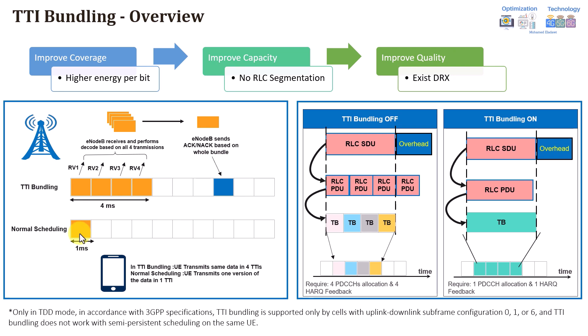Once the eNB triggers TTI bundling — and in general, TTI bundling is triggered based on uplink SNR, PUSCH SNR — for example, if the uplink SNR falls below a certain configured threshold, let's assume the threshold is 10 dB and the user is at 7 or 6 dB, then the eNB will decide that this user should enter the TTI bundling state because it assumes this user has bad radio conditions.